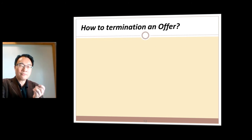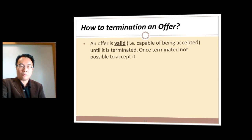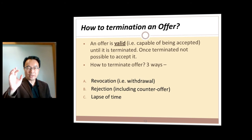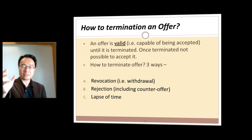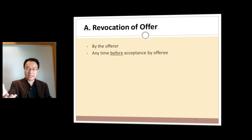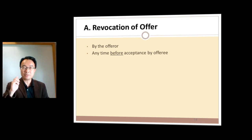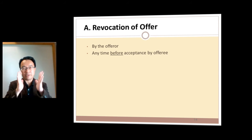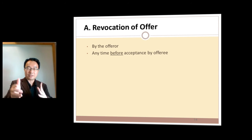How can you terminate an offer — what if you want to change your mind? The offer remains valid until you terminate or kill it, and you can do it in three ways: you can revoke it, the other side could reject the offer, or it could just lapse. If you are the offeror, any time before the other party has accepted you can revoke it. The moment they accept, you're stuck. But any time before they accept, you can revoke.